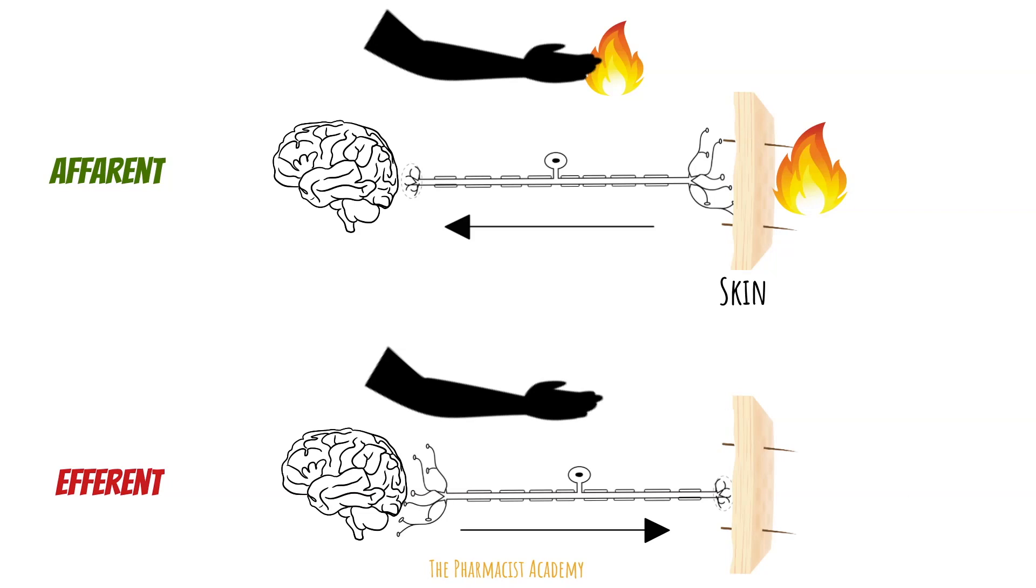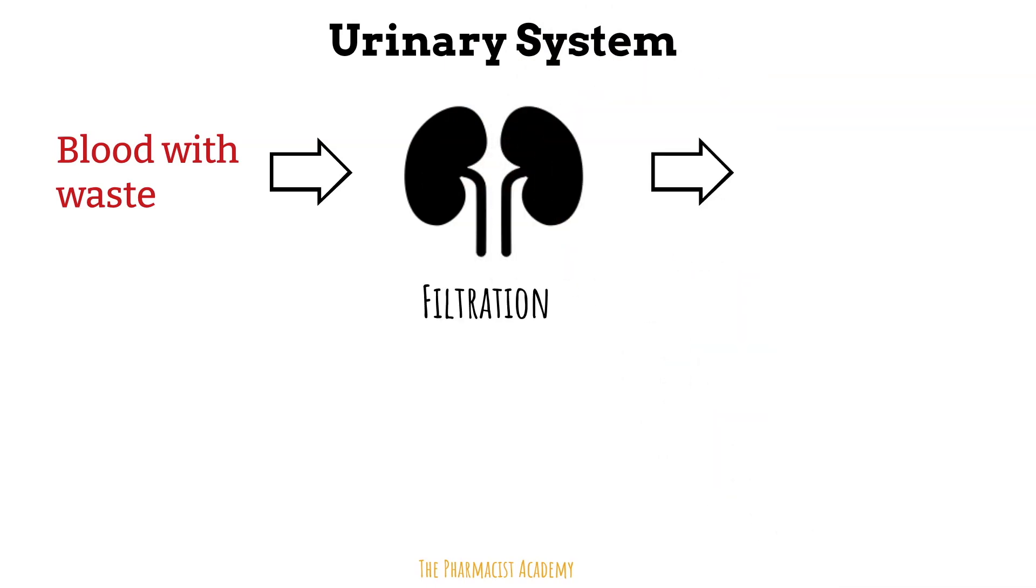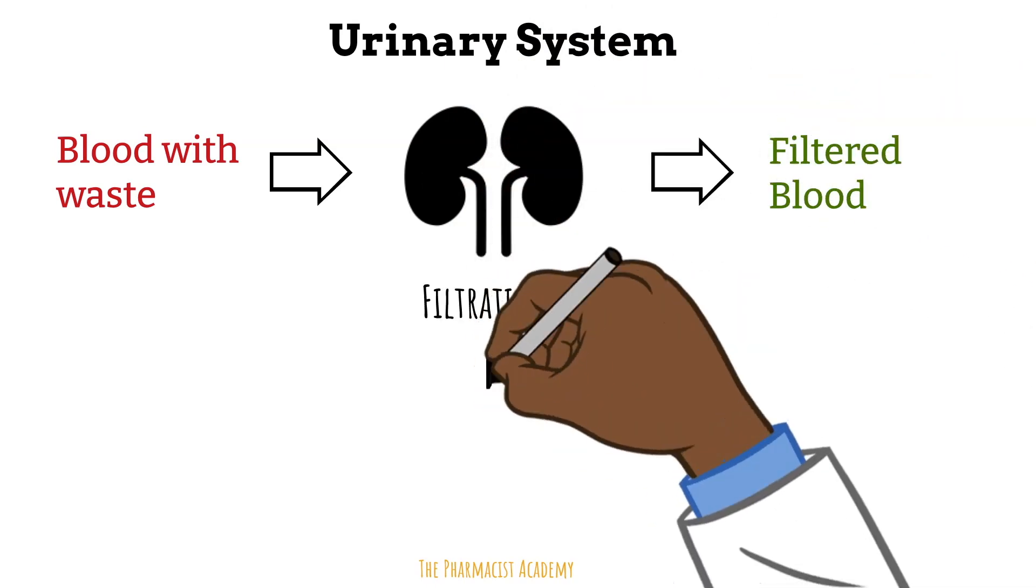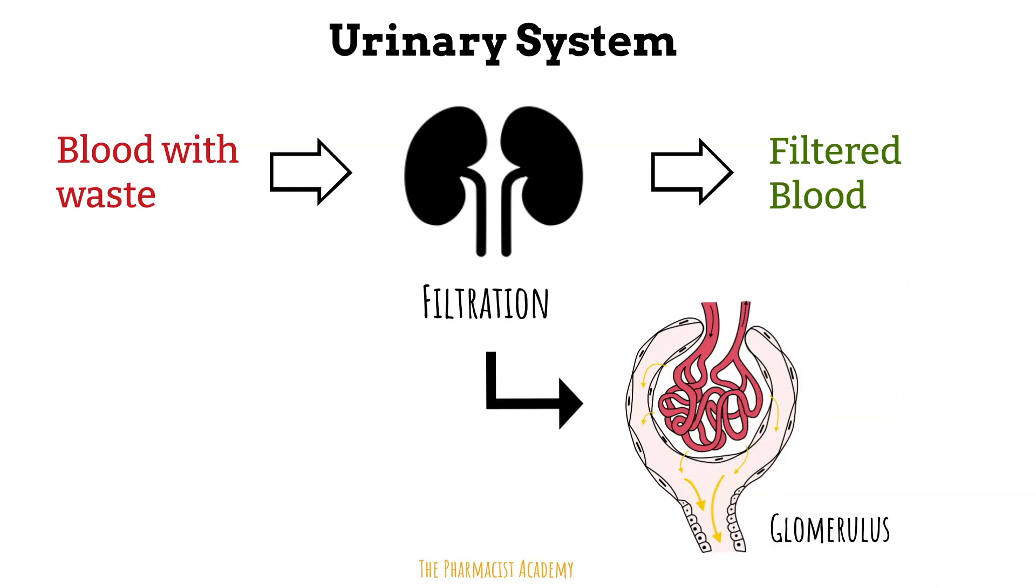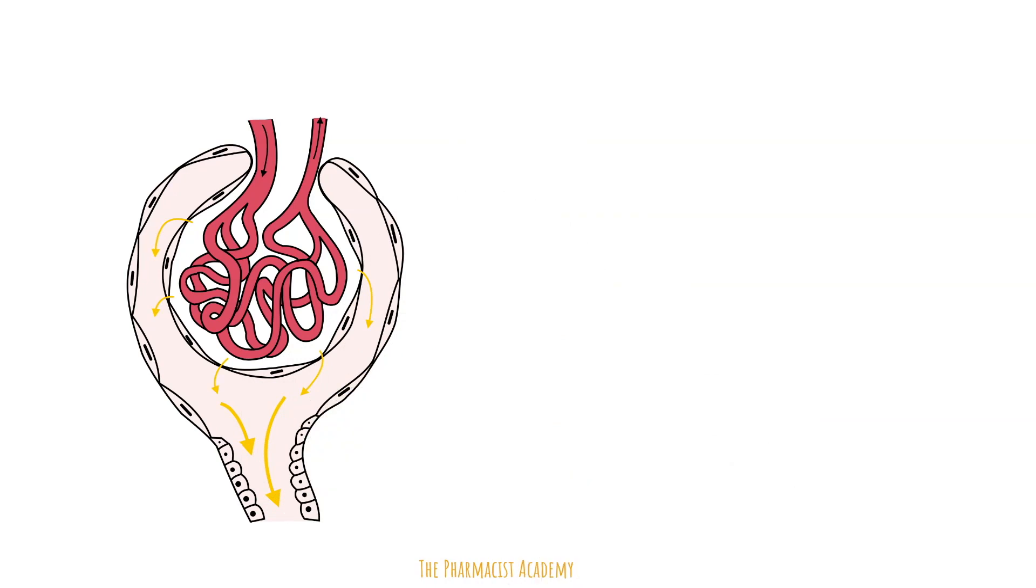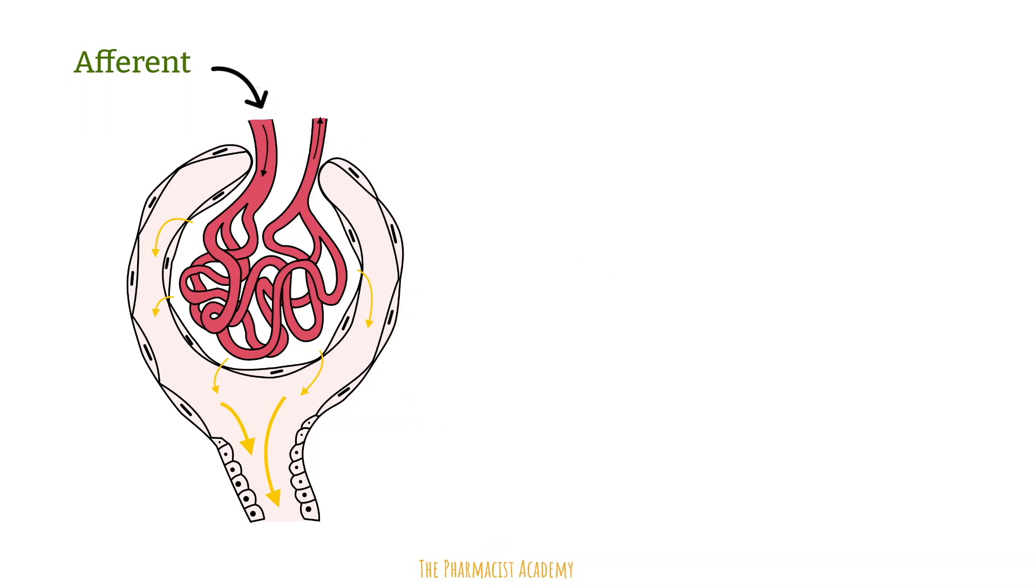This also applies for the glomerulus of the kidney. So normally blood flows into the kidney with waste and different substances, and then it's filtered. The filtration is done by the glomerulus, which is a cluster of small blood vessels. So here we have the glomerulus. In this case, the glomerulus is the reference point. So afferent vessel will bring blood into the reference to be filtered and the efferent will take the filtered blood out of the reference.